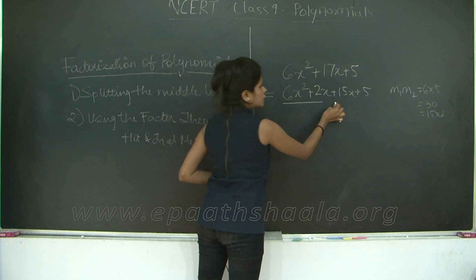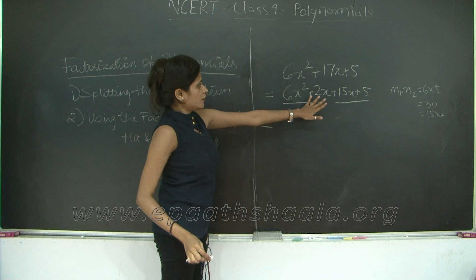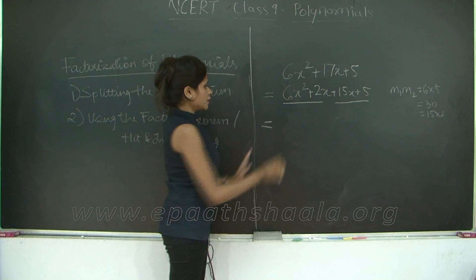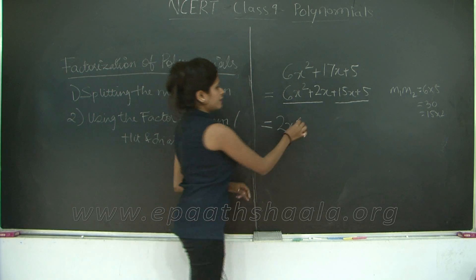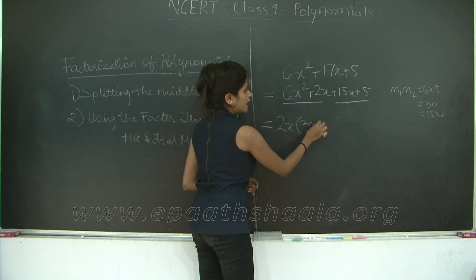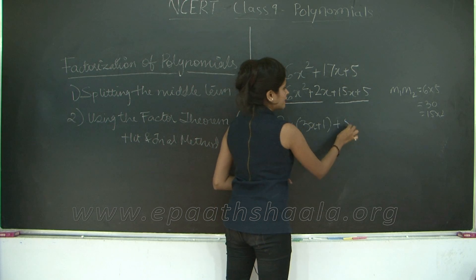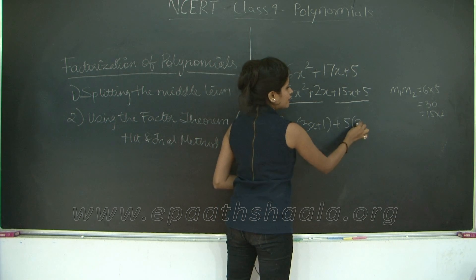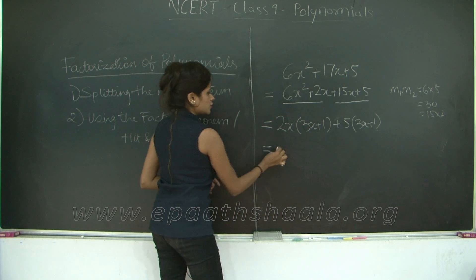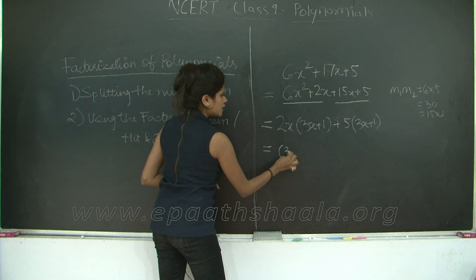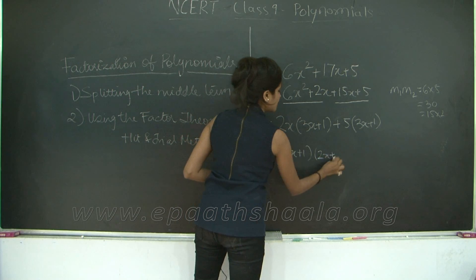Taking two terms at a time: what is common between the first two terms? 2x. So you are left with 2x times (3x plus 1). What is common in the next two terms? 5. So you are left with 5 times (3x plus 1). Therefore this becomes (3x plus 1) into (2x plus 5).